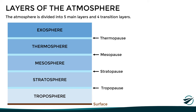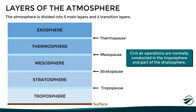Although there are all these layers, civil air operations are normally conducted within the troposphere, and in some cases within the lower levels of the stratosphere, which are the two main layers found closest to the surface. So let's look at a brief description of each of these layers, their characteristics and associated phenomena.